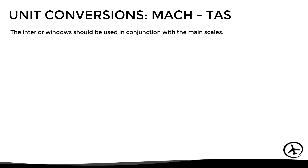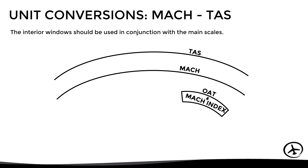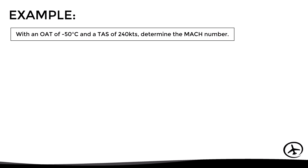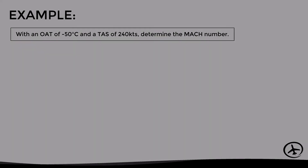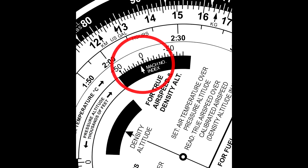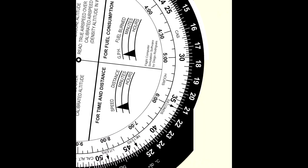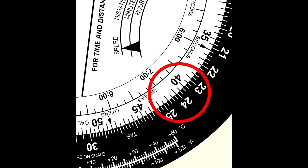For converting between true airspeed and Mach number, the interior windows are used with the main scales. True airspeed is on the outer scale, Mach number on the middle scale, and there is a Mach index on the inner right window to be aligned with the current temperature. Align the Mach index with the air temperature, then read the Mach number on the middle scale corresponding to the true airspeed. For example, with a temperature of -50°C and a true airspeed of 240 knots, align the Mach index with -50°, look for 24 on the outer scale, and read Mach 0.41.